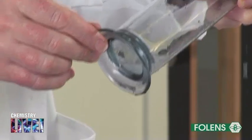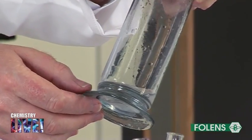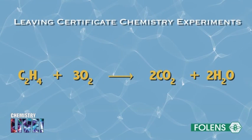The lime water turns milky, showing that carbon dioxide has been formed when ethene burns in air. Ethene burns to form carbon dioxide and water according to the equation shown on the screen. As a general rule, all organic compounds burn in air to form carbon dioxide and water.